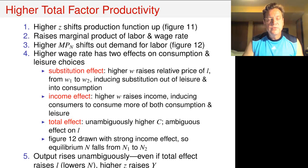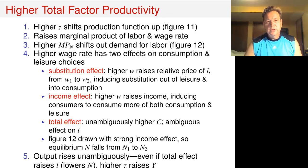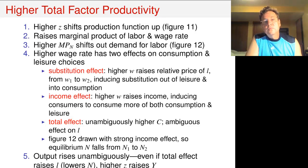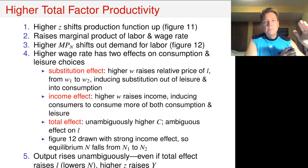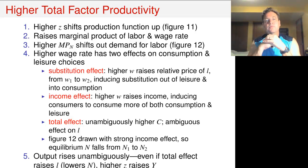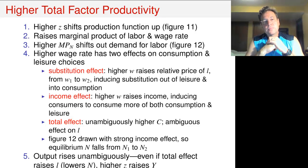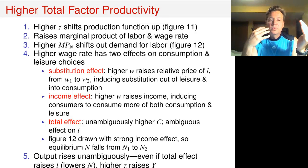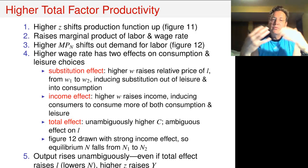So what does an increase in total factor productivity do in this model? This is going to turn out to be a little bit more complicated than the increase in government spending, because higher productivity is going to shift up the production function. That means the marginal product of labor is going to be higher at any given level of employment, and that is also going to drive up the wage. But we then have multiple effects going on.